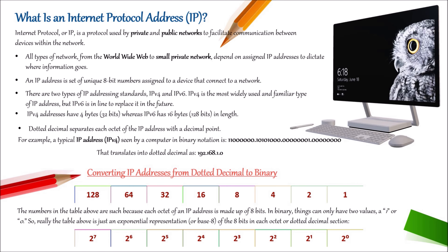What is an IP address? Internet Protocol or IP is a protocol used by private and public networks to facilitate communication between devices within the network. All types of networks, from the World Wide Web to small private networks, are dependent upon the IP address. An IP address is a set of unique 8-bit numbers assigned to a device that can connect to a network.